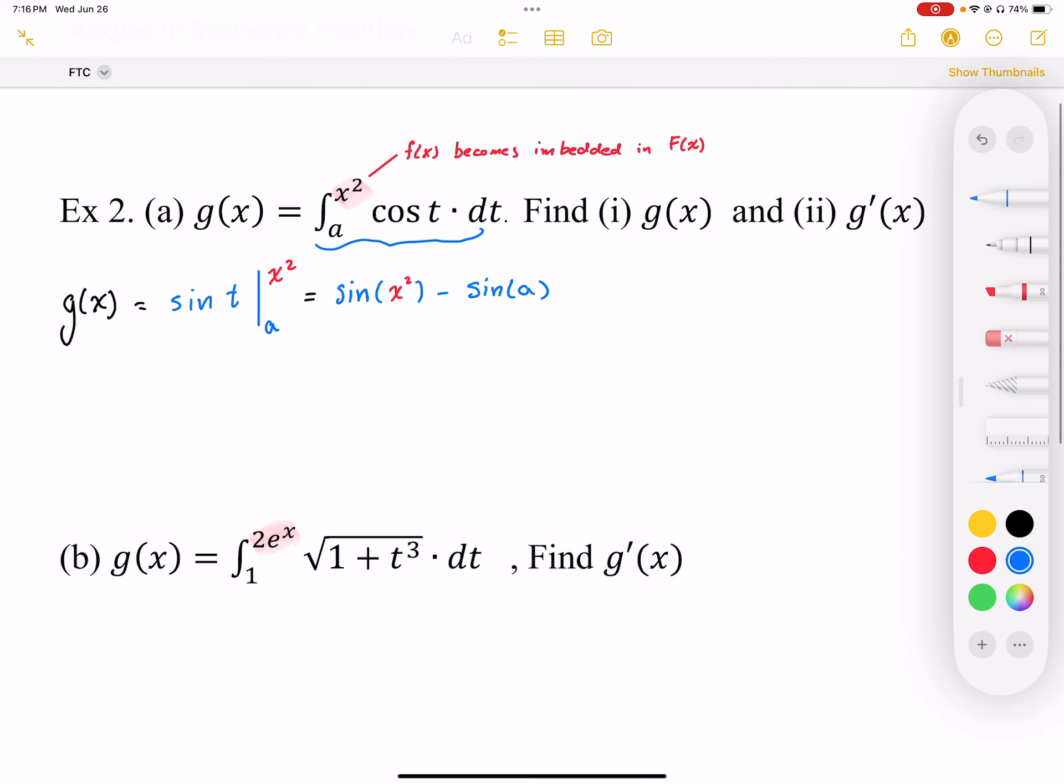And again, sine a now becomes a constant. So when I do the derivative now it's going to disappear. So now differentiating this g function, g prime of x, I'm going to differentiate this antiderivative function which I just worked out: sine of x squared minus sine of a.